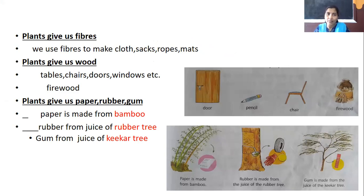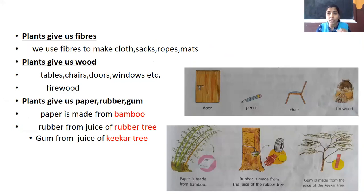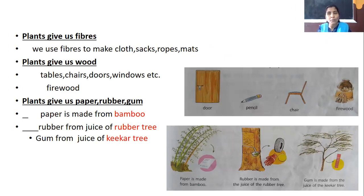Plants give us fibers. We are getting cotton from the cotton plant. We get fibers from plants and these fibers are used to make clothes, sacks, rope, mats, etc.